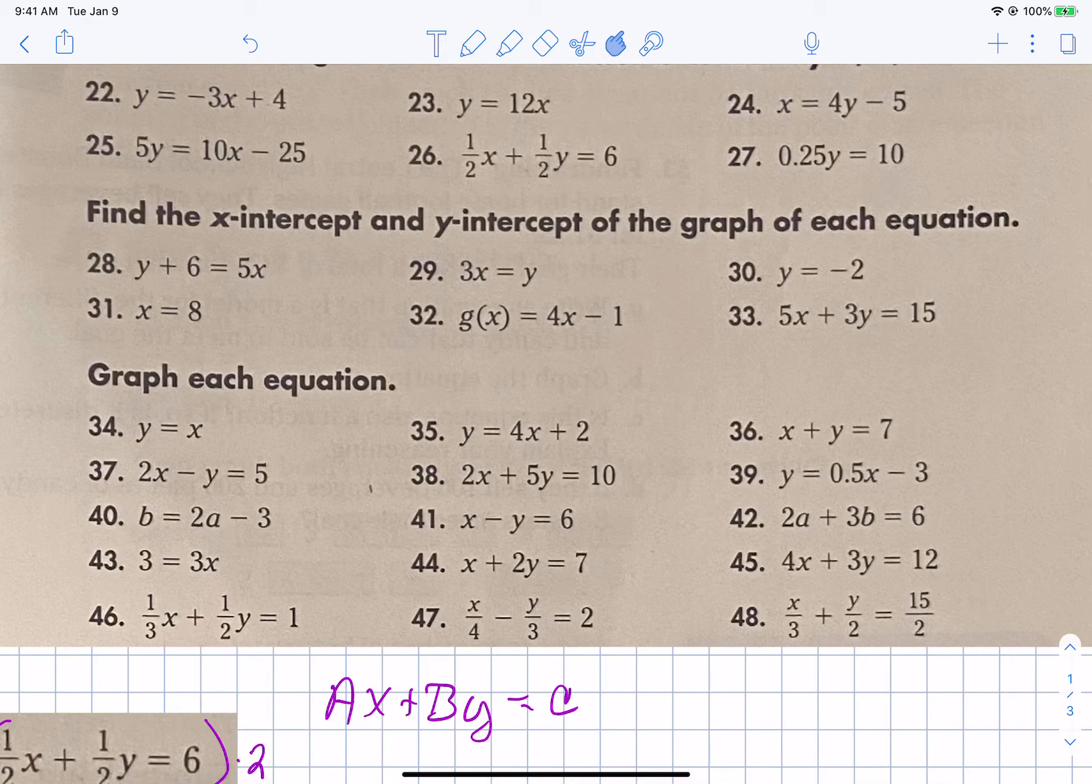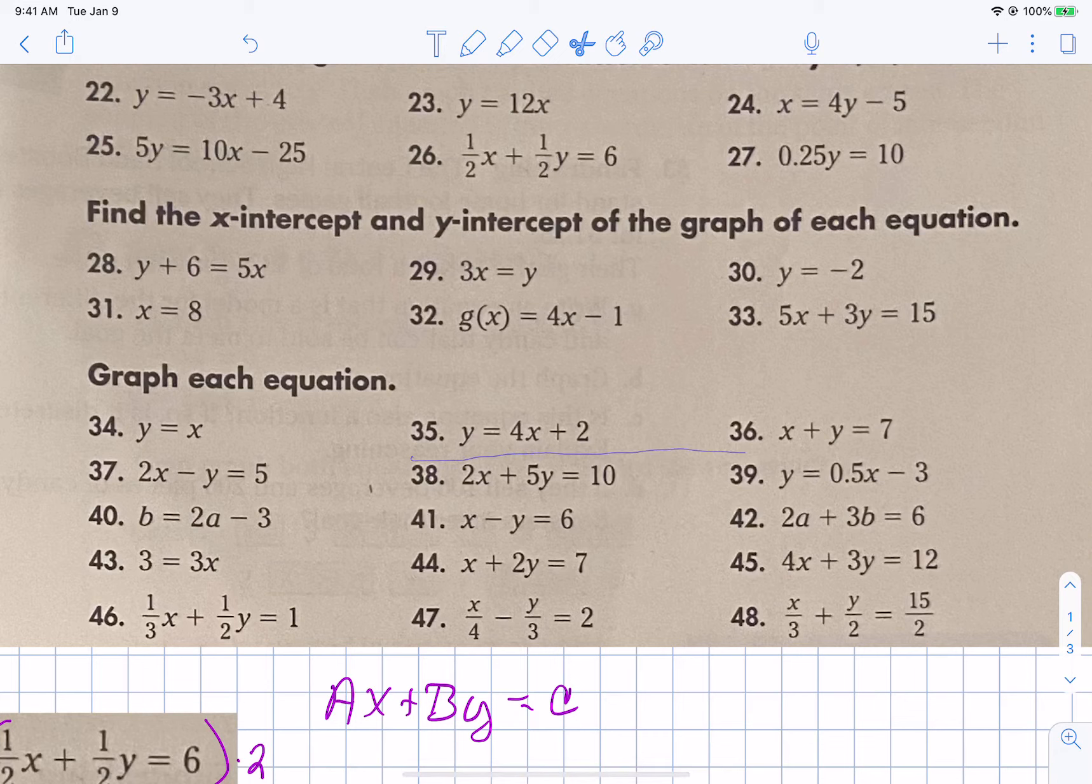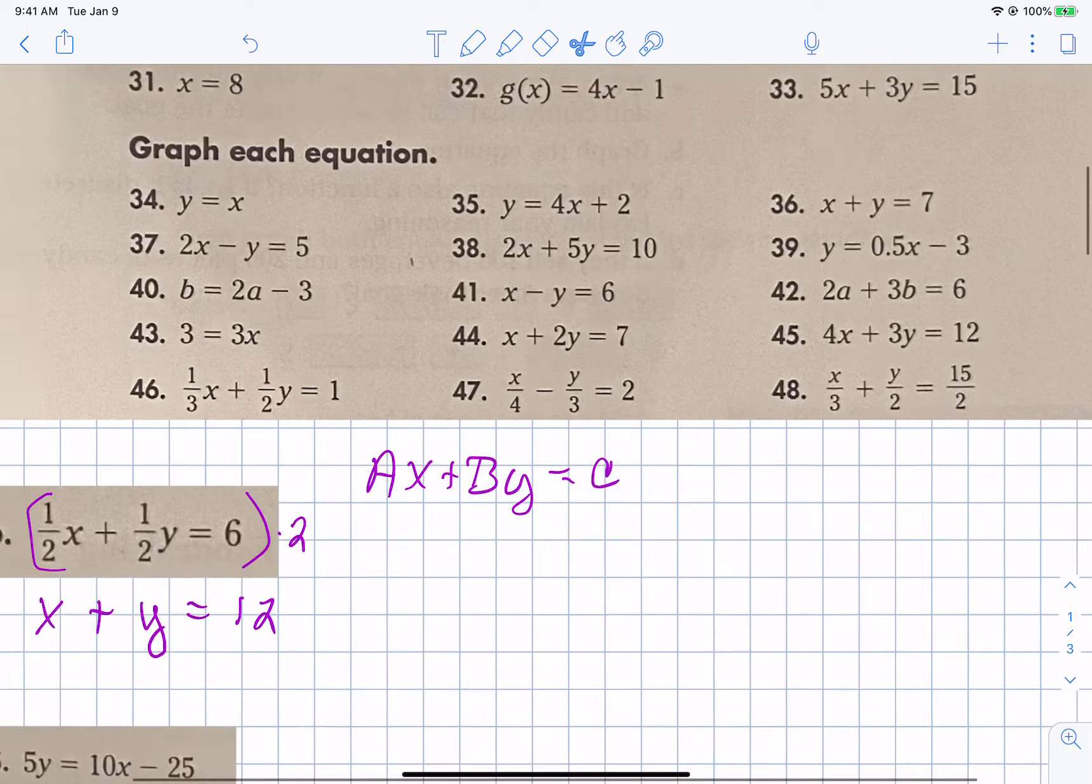Now we're going to talk about graphing. You may graph these however you want. You can use the slope and the y intercept. You can plug in any two x value points you want. You plug in 1 and negative 1, 0 and 1. I don't know, pick two points. There's so many ways to do them. Let's start out. Let's pick these two. Let's pick 38 and 39 to do together. And then what I'm going to do is we'll do one of the fractional ones as well.